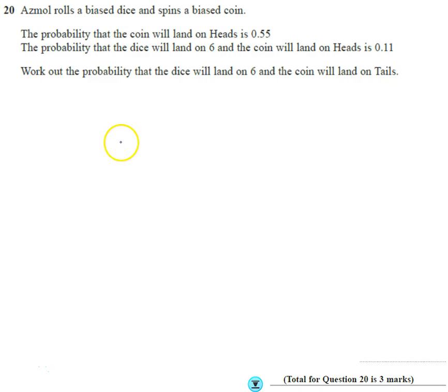It says that Azmol rolls a biased dice and spins a biased coin. The probability that he gets a head is 0.55. So on the coin, the probability of getting a head is 0.55.